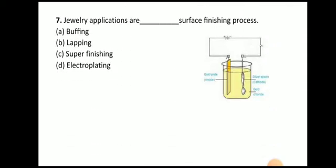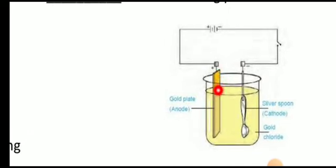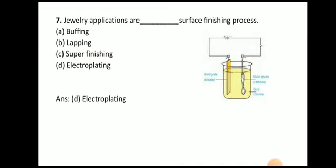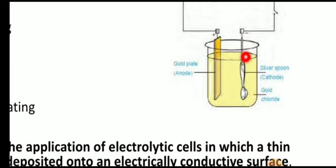Next question: jewelry applications use which surface finishing process — buffing, lapping, super finishing, or electroplating? The answer is electroplating. In electroplating, there is one anode in the form of a gold plate and one cathode which is the object to be plated. The jewelry is plated or coated with the help of the electroplating process. Electroplating is the application of an electrolytic cell in which a thin layer of metal is deposited on an electrically conductive surface.